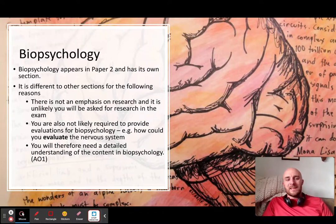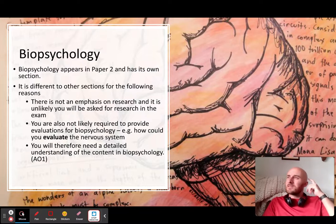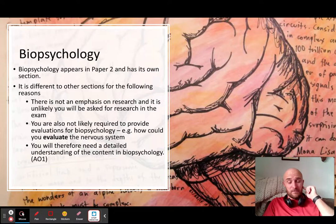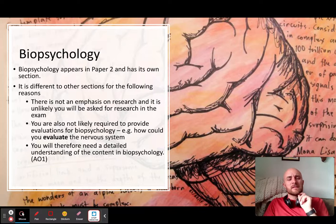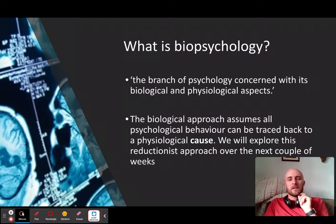Biopsychology appears in paper two. This is arguably the first real topic of paper two that you're going to look at. There's not so many pieces of research apart from in the fourth bullet point. But as I say, you are going to need good AO1.